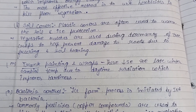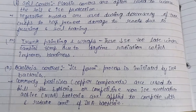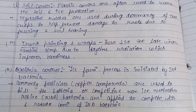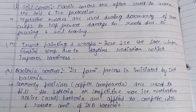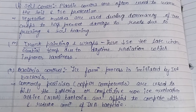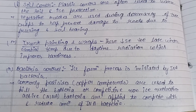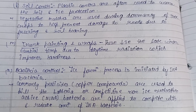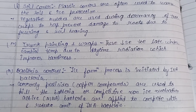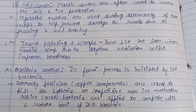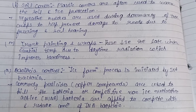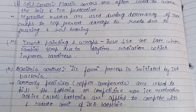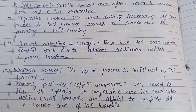Trunk painting and wraps decrease late-winter cambial temperature due to daytime radiation, which improves hardiness. For bacteria control, ice formation is initiated by ice-nucleation-active (INA) bacteria. Copper compound pesticides are used to kill the bacteria, and competitive non-ice-nucleation-active (NINA) bacteria are applied to compete with and reduce the concentration of INA bacteria.